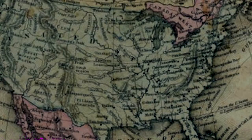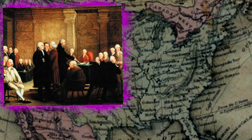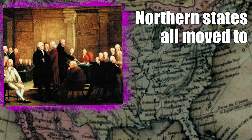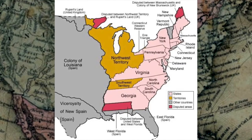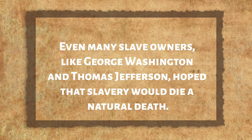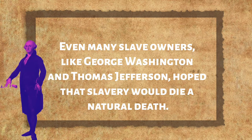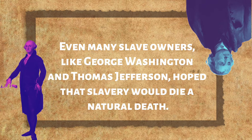American slavery dates back to its colonial origins. However, after the American Revolution, there were signs that it was on its way out. With the ideals of the American Revolution, northern states all moved to end slavery. It was also prohibited in the open lands of the Old Northwest, and it was becoming less and less profitable in the South. Even many slave owners, like George Washington and Thomas Jefferson, hoped that slavery would die a natural death, so to speak.